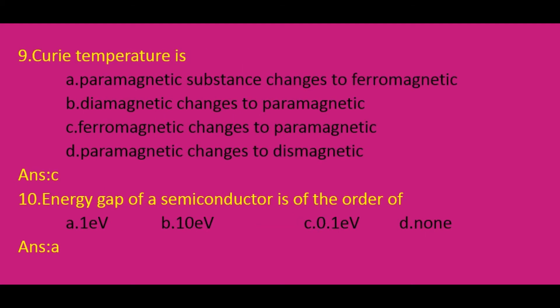Curie temperature: at and above that temperature, a ferromagnetic material changes to paramagnetic. That temperature is called the Curie temperature. So the answer is C.